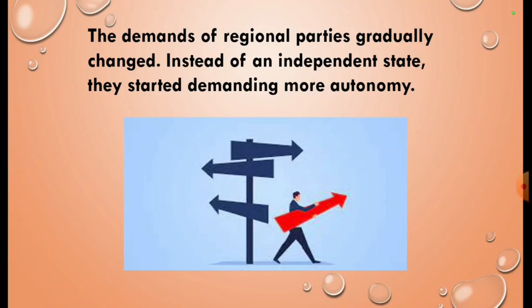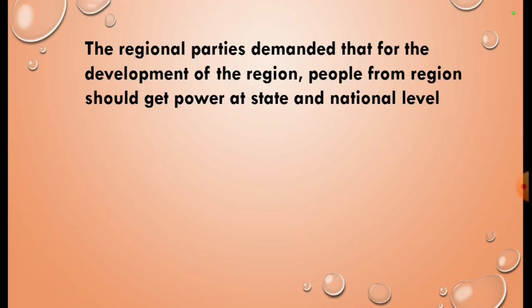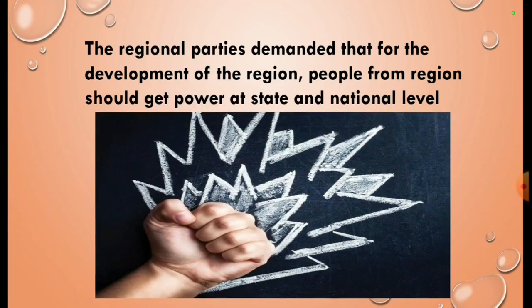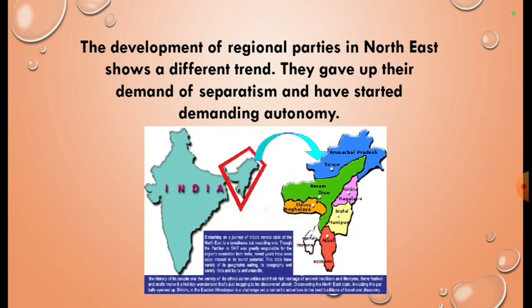This second stage began after 1990. The regional parties demanded that for the development of the region, people from the region should get power at the state and national level — for example, Shiv Sena and Telugu Desam. The development of regional parties in North East shows a different trend: they gave up their demand for separatism and started demanding autonomy, and are now entering the mainstream of national politics.